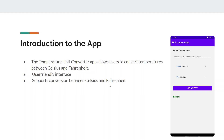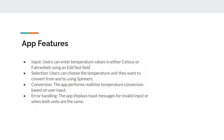We also have to handle some edge cases. Moving to the features we have implemented: the user can enter the temperature value in either Celsius or Fahrenheit using an EditText field. The user can also choose the temperature unit they want to convert from using a spinner — a drop-down type spinner.